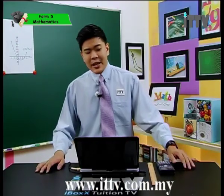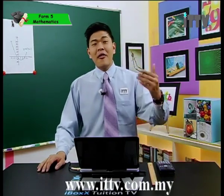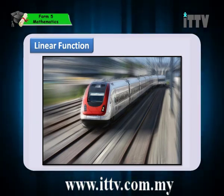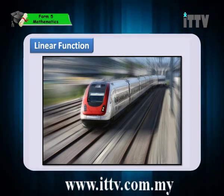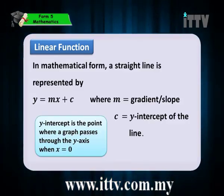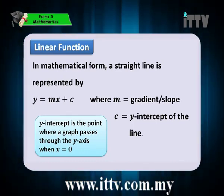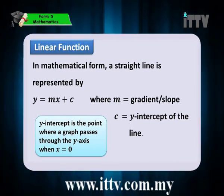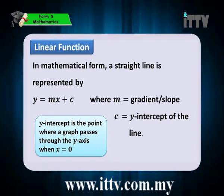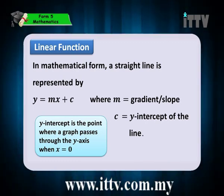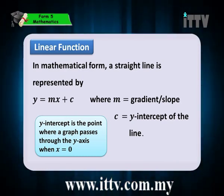In mathematical form, a straight line is represented by the equation y equals mx plus c, where m equals the gradient — also known as the slope — and c equals the y-intercept of the line. Note that the y-intercept is the point where the graph passes through the y-axis when x is equal to 0.